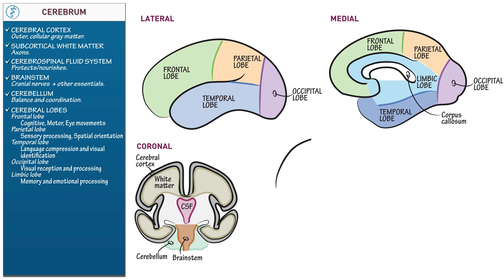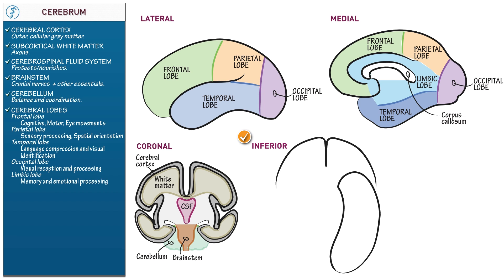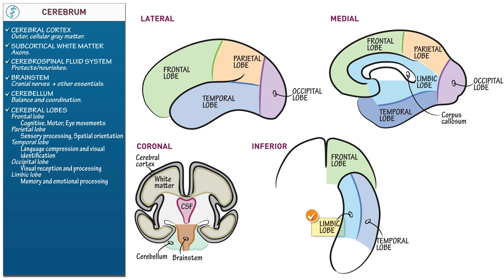Now draw the inferior surface of the brain — draw one half only; we'll use the other half later for other purposes. Shade the lobes as follows: anterior is the frontal lobe, lateral middle is the temporal lobe, medial middle is the limbic lobe, and posterior is the occipital lobe.